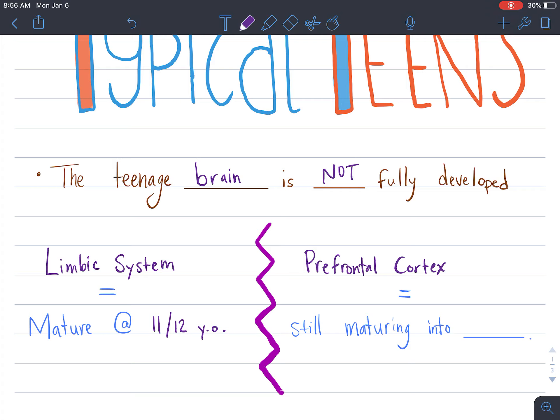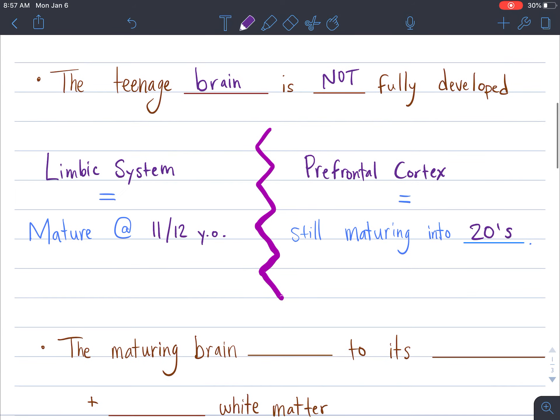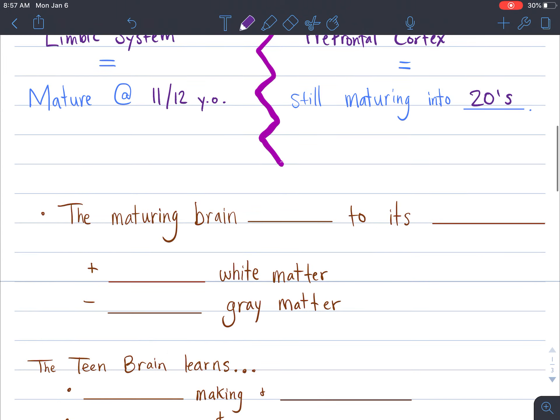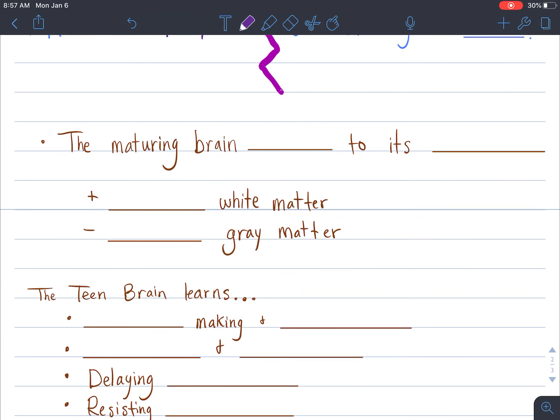So the prefrontal cortex is the part of our brain that is still maturing and it still matures into your 20s. So as an adolescent teenager, you are just starting to get some of this work done on your prefrontal cortex.